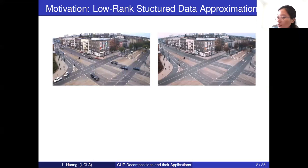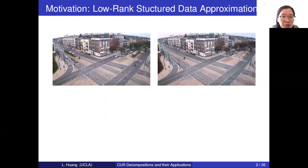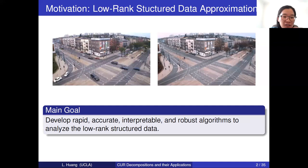For example, in a video, we would like to separate the background from the moving objects. In order to achieve this goal, what we can do is vectorize each frame into a vector and then stack these vectors frame by frame into a matrix. Because the background is usually fixed, we can consider the matrix stacked by the background as a low-rank matrix. And at each frame, you only have a few objects moving over time, so you can consider the matrix stacked by the moving objects as a sparse matrix. The middle of my talk can be summarized as how to design fast, accurate, interpretable, and robust algorithms to analyze low-rank structured data.